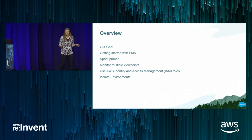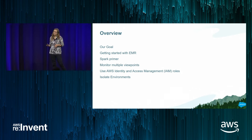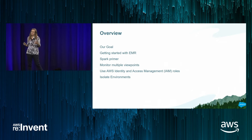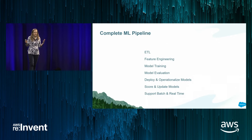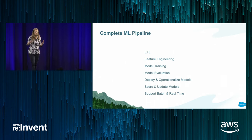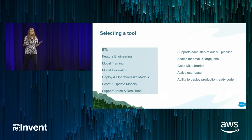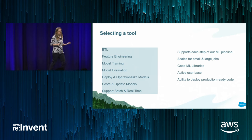Our best practices include monitoring our environments with multiple viewpoints, using IAM roles, and isolating environments. Our goal was to create a complete machine learning pipeline: feature engineering, training, evaluation, deployment, and operationalization. We needed a tool that would scale for small and large jobs, had built-in machine learning libraries, and had a great user base. For us, Spark was the clear choice.